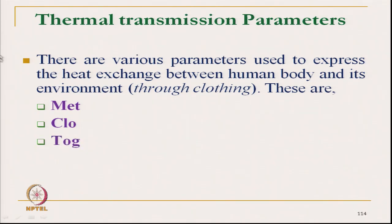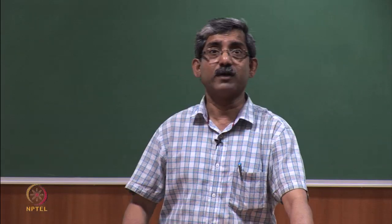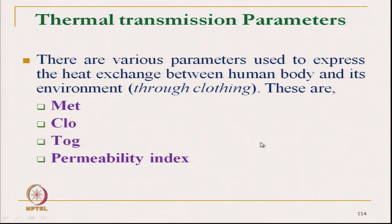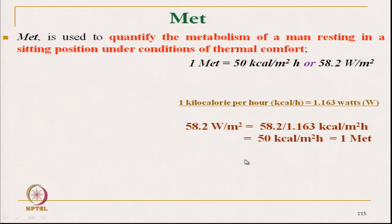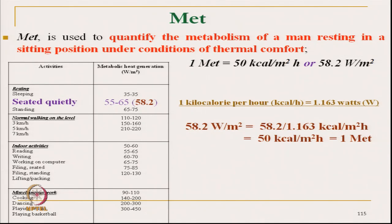These three terms — MET, CLO, and TOG — are related with the thermal transmission. Along with that, the permeability index is used for measuring thermal transmission characteristics along with moisture vapor transmission. MET is used to quantify the metabolic heat. It is the metabolism of a man when he is resting and sitting under conditions of thermal comfort. Whatever metabolic heat a person produces when sitting and resting comfortably is called one MET.